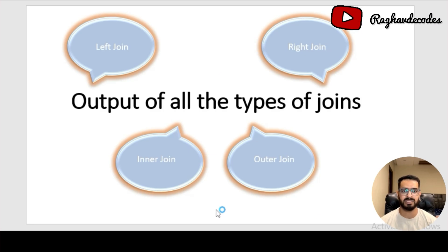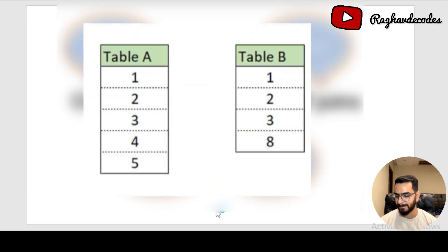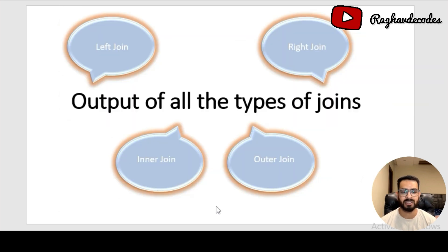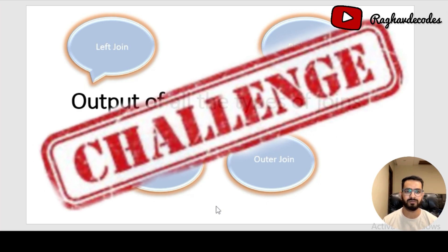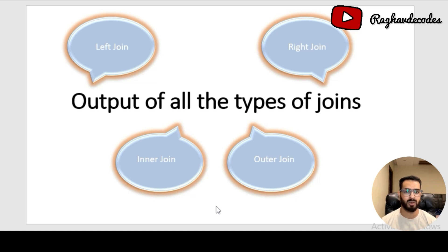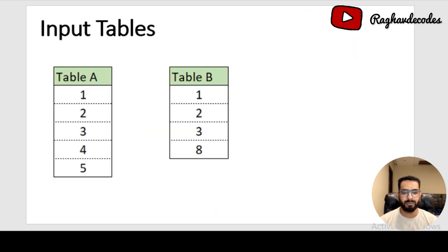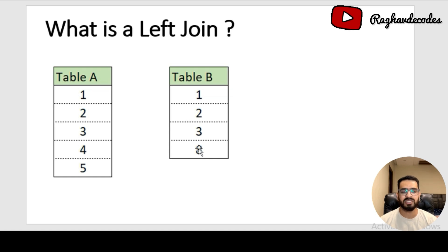You are given two tables and have to find out the output of all the types of joins — that is, left join, right join, inner join, and outer join. Seems easy, right? Don't worry, we'll be introducing a challenge in the later part of the video to make this question a tricky one. We have two input tables: on the left, Table A has five rows, and on the right, Table B has four rows.